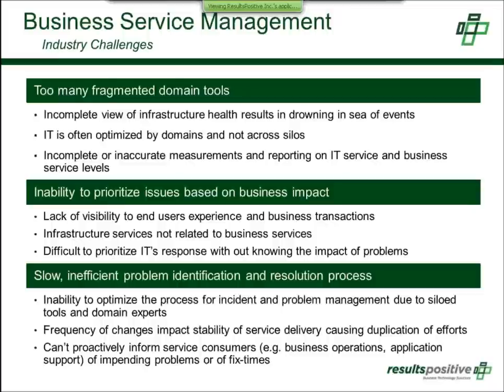This results in incomplete or inaccurate measurement reported across IT and business services. When there's an outage or performance degradation, using incomplete measurements or having gaps causes problems when identifying root cause. The second issue is the inability to prioritize issues based on business impact — there's a lack of visibility into end-user experience. It's hard to prioritize what to work on if you don't know what part is causing critical issues based on end-user experience. Infrastructure services are not related to business services, meaning infrastructure is viewed from a siloed perspective rather than from the perspective of a business service or application.